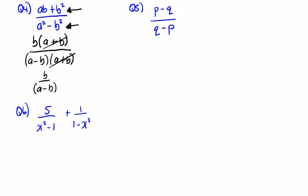For question 5, how can we make one denominator the same as the other? If we take minus 1 outside both terms in the numerator — minus 1 times q gives minus q, and minus 1 times minus p gives plus p — we end up with minus 1 on top, giving minus q plus p, or p minus q. The denominator is also q minus p. These cancel, so the answer is minus 1.